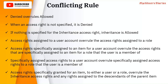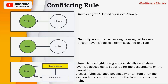Access rights specially granted for an item to either a user or a role overrule access rights assigned to the descendant of the parent item. So these are the conflicting rules — if you find a conflicting rule in your setup, this is how it gets resolved. The main important thing is this diagram for access rights, security accounts, and items. Denied will always override allowed. For security accounts, user access overrides role access, and at the item level, specific access overrides descendant or inherited access.